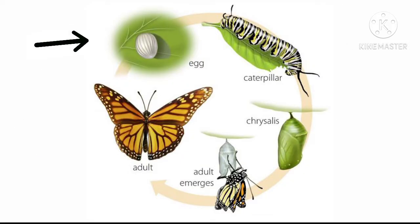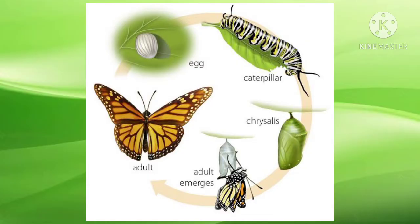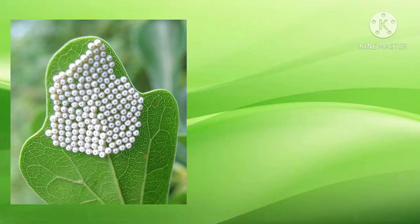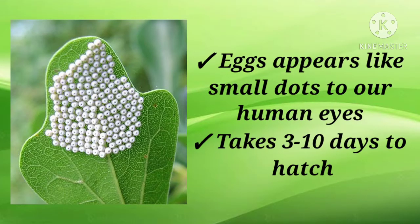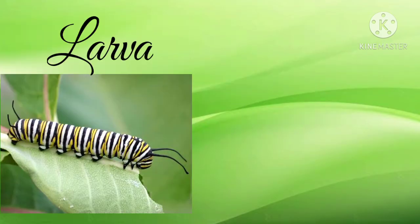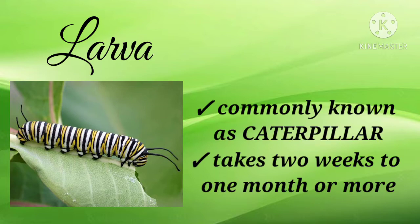The butterfly life cycle starts with the egg, followed by the larva, then the pupa stage, and adulthood. An adult female butterfly lays eggs after mating and fertilization has occurred. Eggs appear like small dots to our human eyes, and it usually takes three to ten days for the eggs to hatch depending on the kind of butterfly. As the egg hatches, a larva comes out, commonly known as a caterpillar. It usually eats its empty shell first before looking for food. This stage takes two weeks to one month or more.